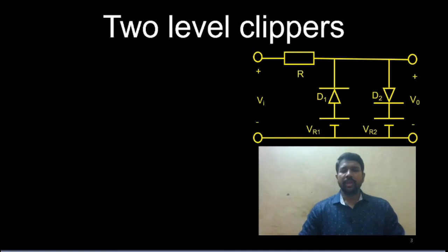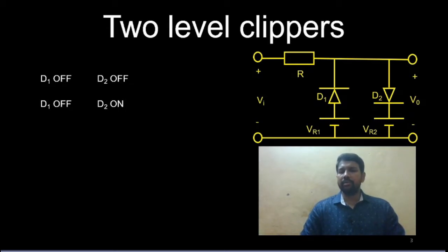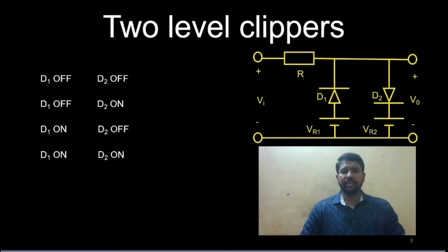With these two diodes, the four possible states are: first, D1 off and D2 off; second, D1 off and D2 on; third, D1 on and D2 off; and fourth, D1 on and D2 on. These are all four possible states the diodes can be operated in.